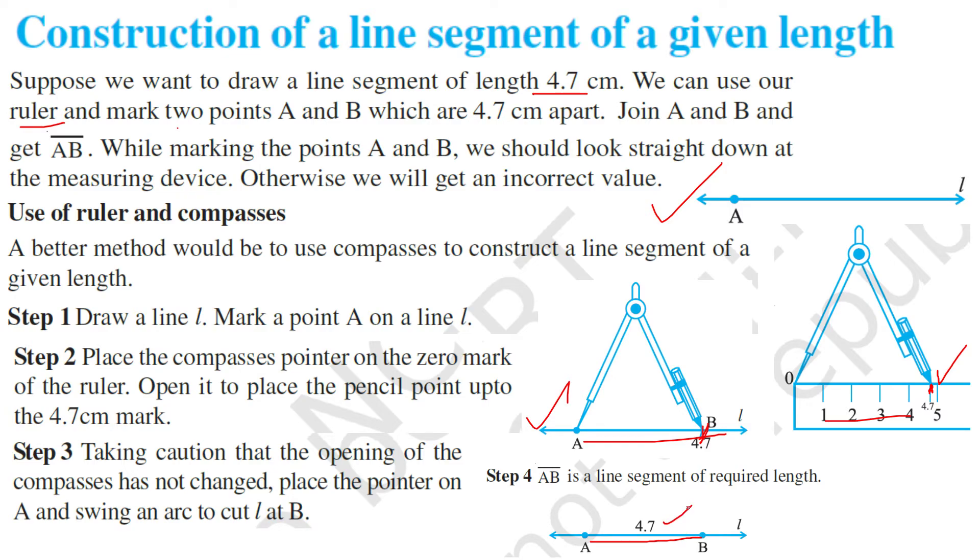So A B is a line segment of required length. In this way we can draw a correct line.